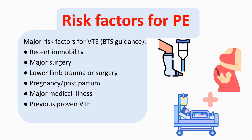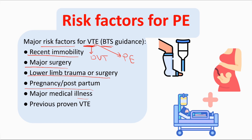What are the risk factors for pulmonary embolism? According to the British Thoracic Guideline, the major risk factors for venous thromboembolism, whether DVT or pulmonary embolism, include recent immobility, major surgery, lower limb trauma or surgery, pelvic pregnancy or postpartum, major medical illness, any illness leading to admission of more than three days, and previous proven venous thromboembolism events.